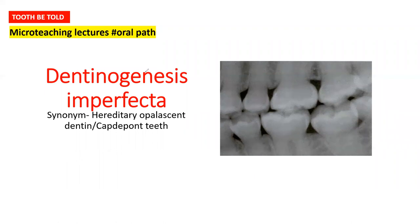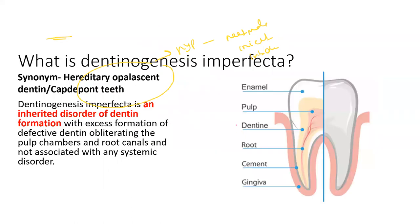Good morning. This is a micro-teaching lecture on dentinogenesis imperfecta, covering all high yield points related to NEET MDS, INICED, and INBDE. Dentinogenesis imperfecta is an inherited disorder of dentin formation with excess formation of defective dentin obliterating the pulp chambers and root canals, and it is not associated with a systemic disorder.